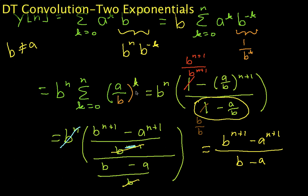Welcome to part 2 of this video in which we are convolving two exponentials. In part 1, we showed how to do the convolution when the base term or the factor of the exponentials are different. We had, in this case, b is not equal to a.